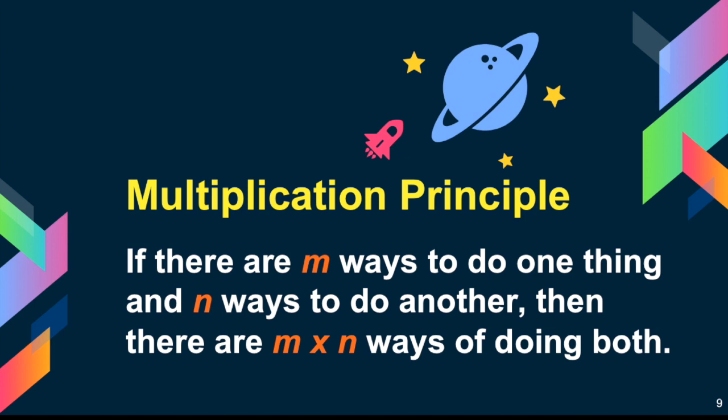This can also be written as the multiplication principle: if there are m ways to do one thing and n ways to do another, then there are m × n ways of doing both.